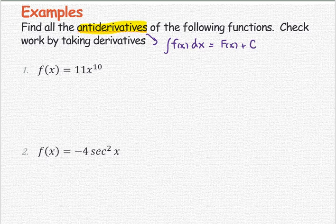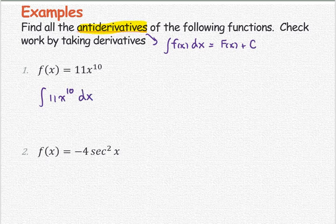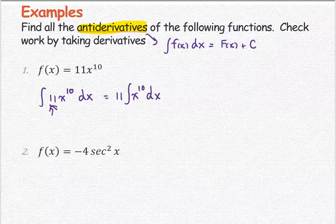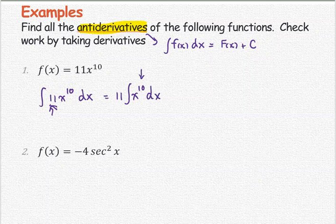For number one, f(x) equals 11 times x to the power 10. All antiderivatives means the indefinite integral of 11x^10 with respect to x. We see the constant 11 — use the constant multiple rule — so 11 multiplied by the integral of x to the power 10 with respect to x. Now we apply the power rule.